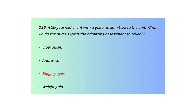Q36. A 25-year-old client with a goiter is admitted to the unit. What would the nurse expect the admitting assessment to reveal? Slow pulse, anorexia, bulging eyes, or weight gain.